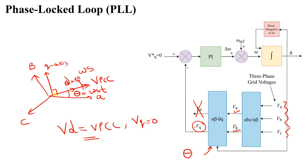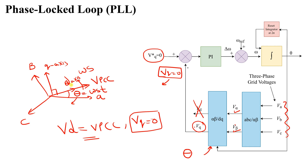What is important is VQ. If I estimate this angle correctly — if the D-axis is oriented on VPCC and I select the right angle — then VQ will be equal to zero. If theta is estimated wrongly, VQ will not be equal to zero. We give an initial estimated angle theta, compute VD and VQ using the Park transformation from alpha-beta to DQ, then compare VQ with a VQ reference of zero to generate an error signal.